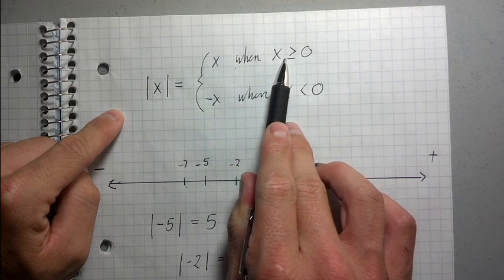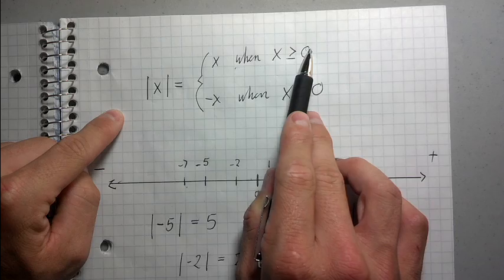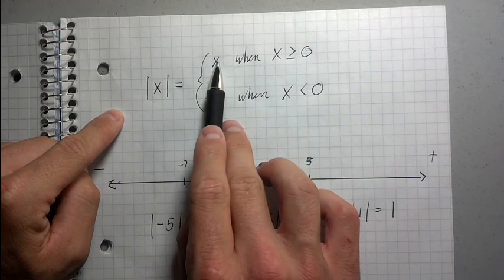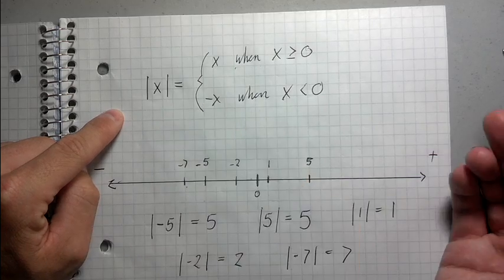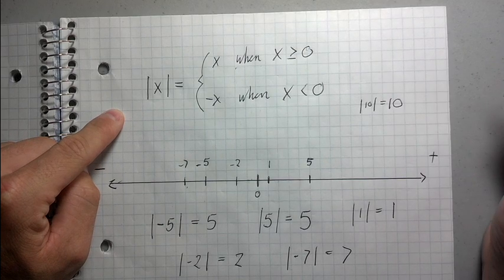what I'm going to do is I'm going to refer to this first part of the definition when x is greater than or equal to 0, meaning it's positive. So, 10 is greater than or equal to 0, so I'm going to use this first part of the definition. So, 10 equals 10. Absolute value of 10 equals 10. And that's why this would be true. Absolute value of 10 equals 10. Okay.